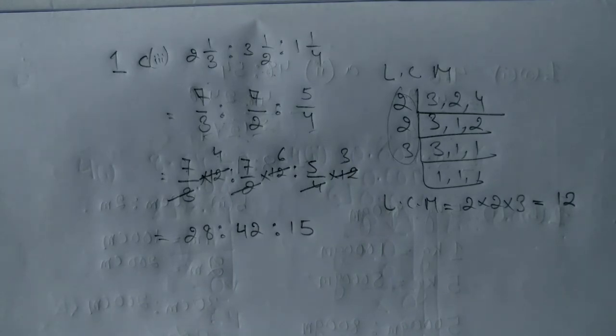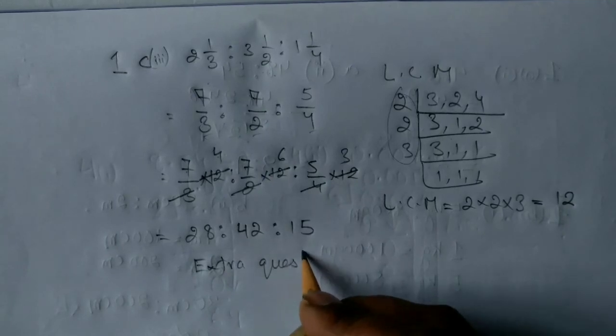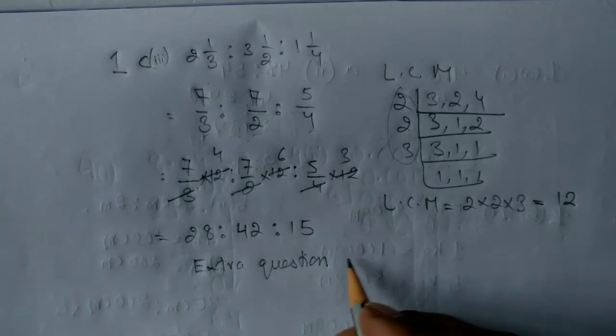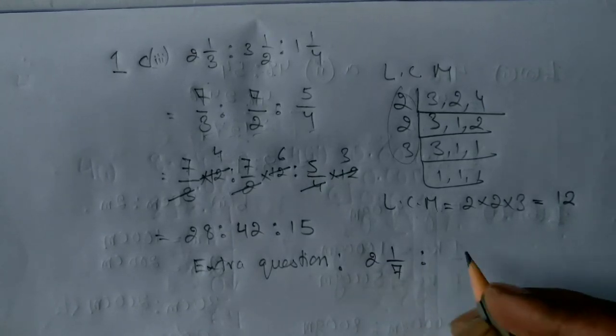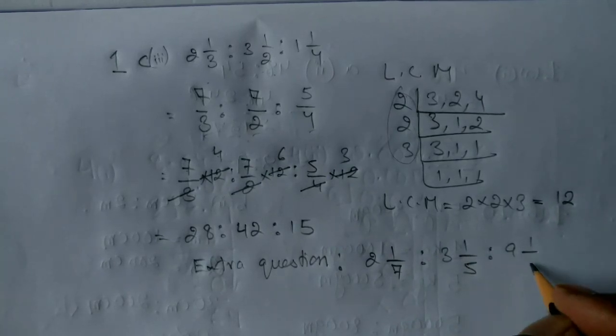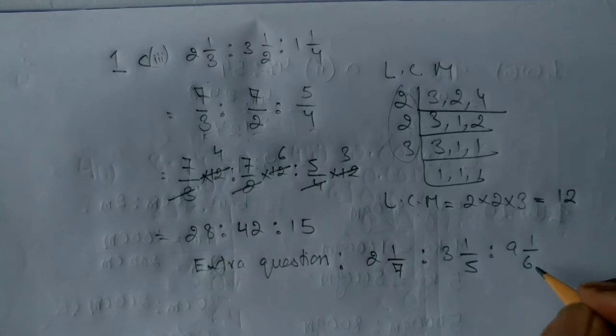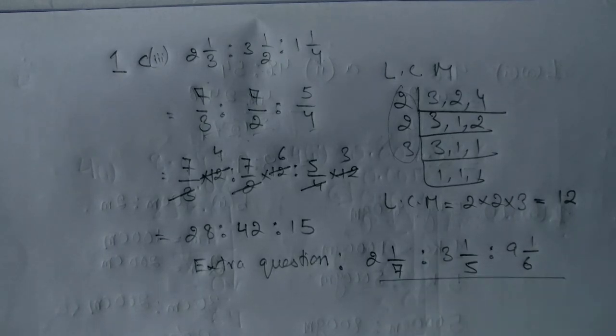I'll give you an extra question right now. Please try to solve that also. This is the extra question. Please try to solve this extra question. The question is 2 1 upon 7 is to 3 1 upon 5 is to 9 1 upon 6. Let me see how will you solve this and try to find a proper answer. This is the extra question, it's not in your book.